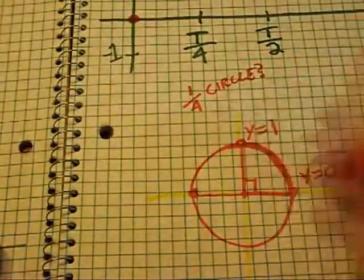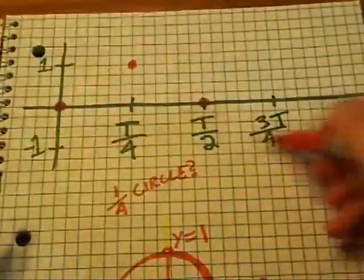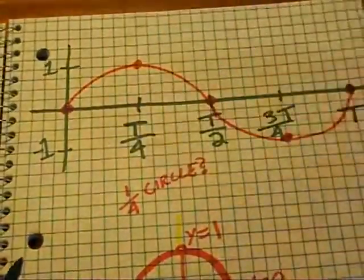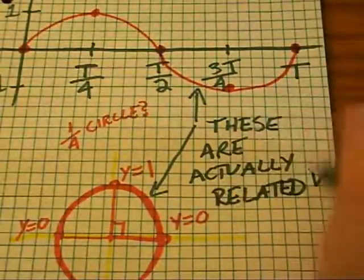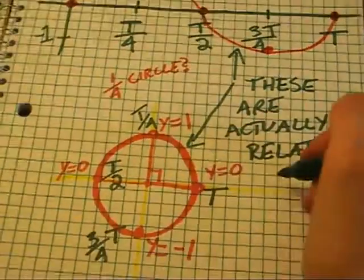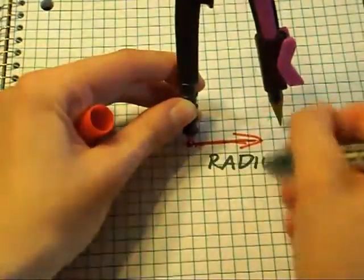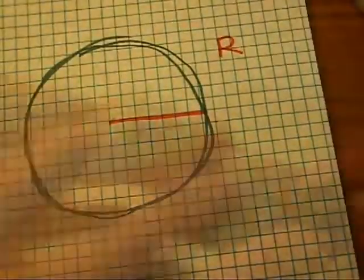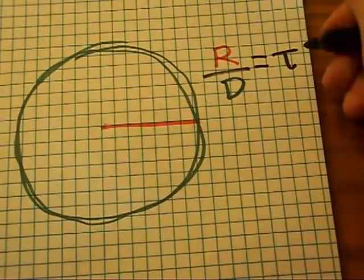Tau over 2 — half a circle around, back at 0. Three quarters Tau, three quarters of the way around, negative 1. A full turn brings us all the way back to 0, and bam — that just makes sense. Why? Because we don't make circles using a diameter; we make circles using a radius. The length of the radius is the fundamental thing that determines the circumference of a circle. So why would we define the circle constant as the ratio of the diameter to the circumference? Defining it by the ratio of the radius to the circumference makes much more sense, and that's how you get our lovely Tau.